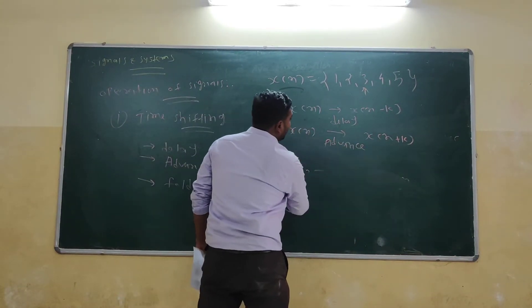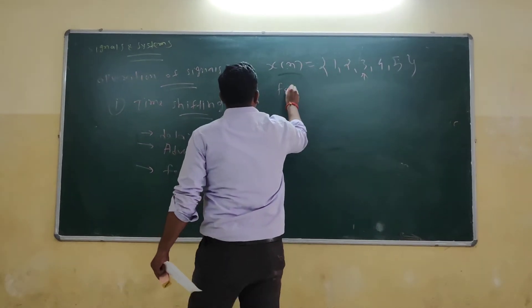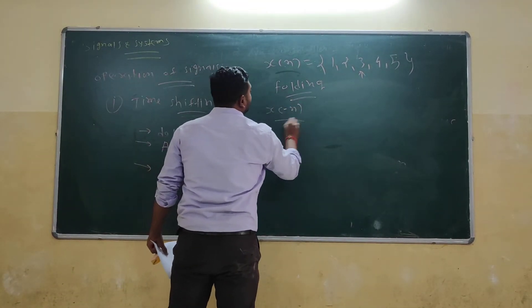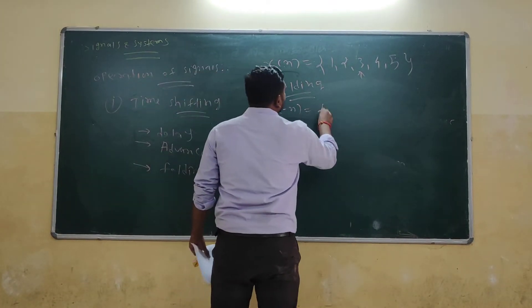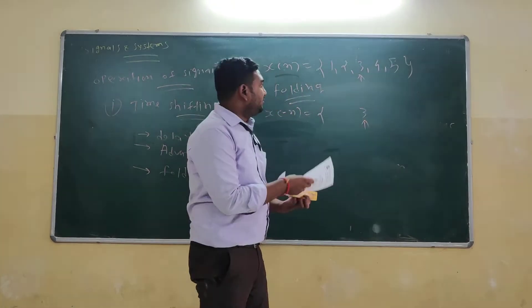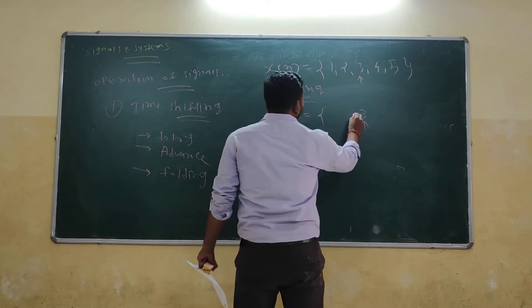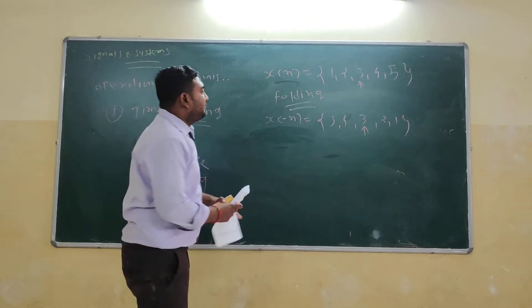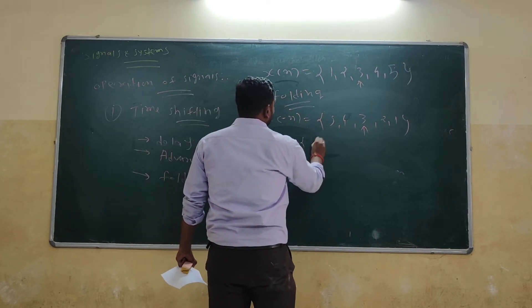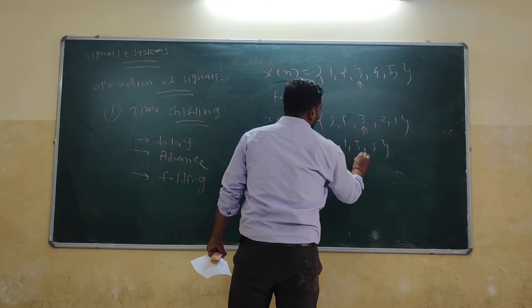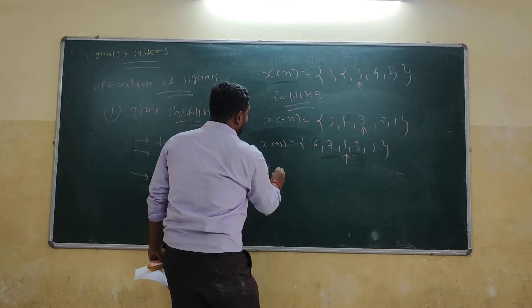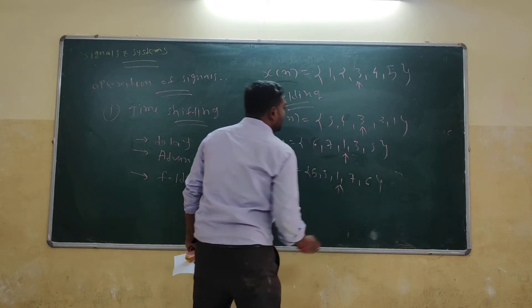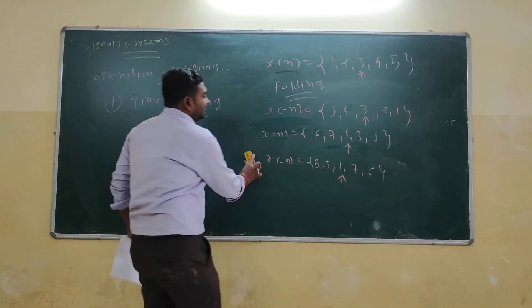The third one is folding sequence. Folding means if we have a signal, we have to find x[minus n]. x[minus n] means the same sequence values but from right side to left side — the arrow will move. So 4 is there, 5 is there, same as 2 and 1. This will be called as folding sequence. For example, if x[n] is equal to 6, 7, 1, 3, and 5, then x[minus n] is 5, 3, 1, 7, and 6, and the arrow position will be on 1.